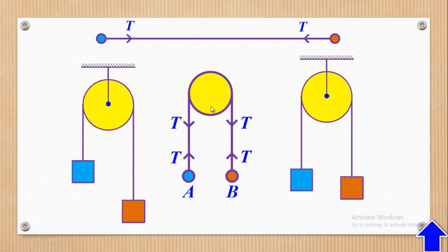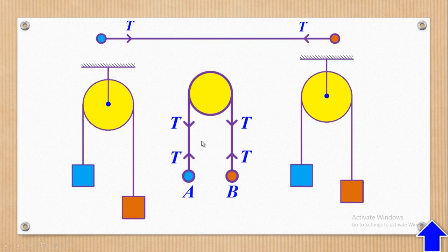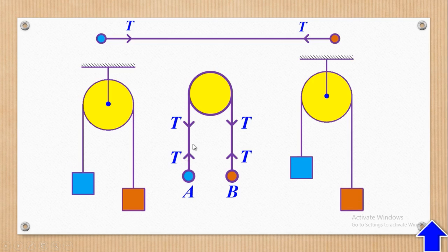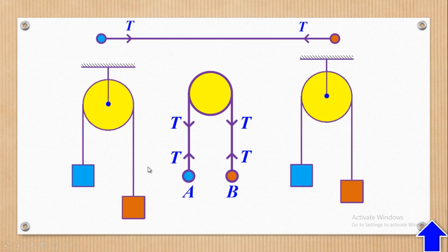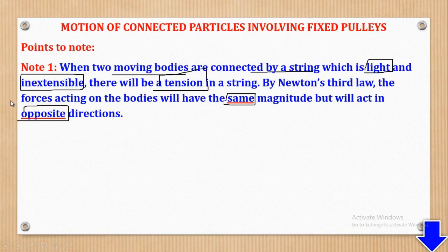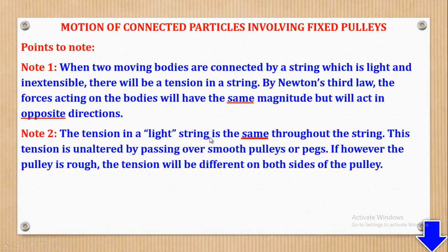This is the same case if the string passes over a pulley. If this is the pulley and these are particles with the string passing over it and hanging freely, there will also be tension in the string acting in opposite directions but with the same magnitude. The second note is that the tension in a light string is the same throughout the string and is unaltered by passing over smooth pulleys or pegs.